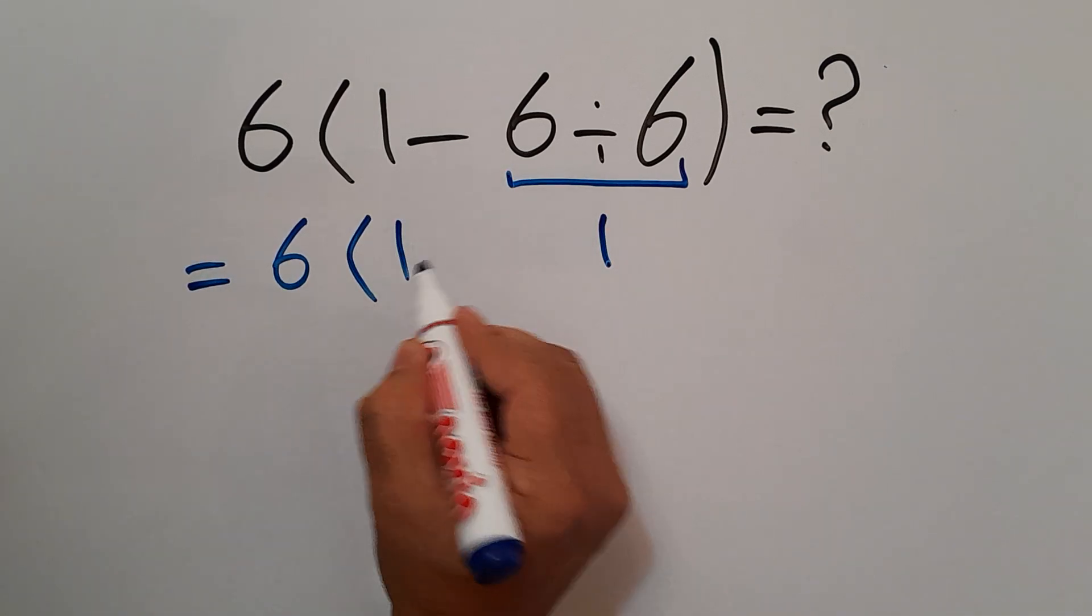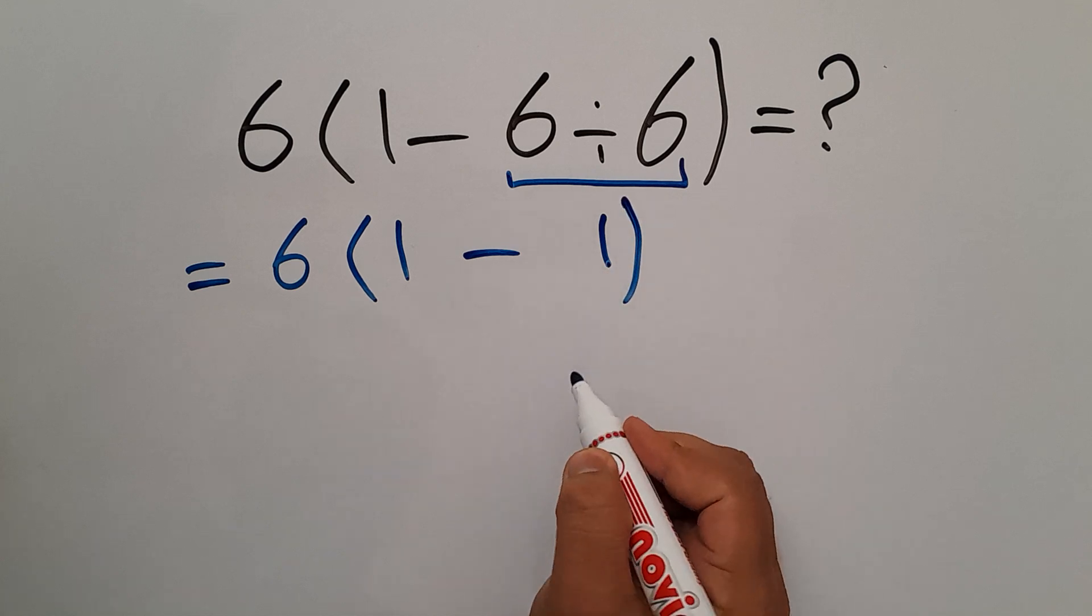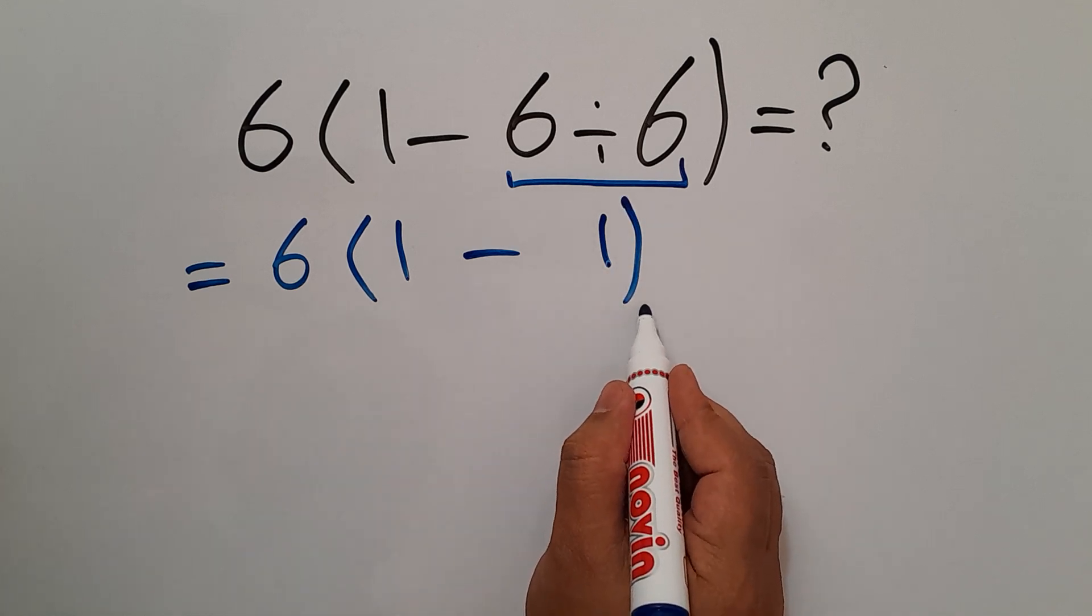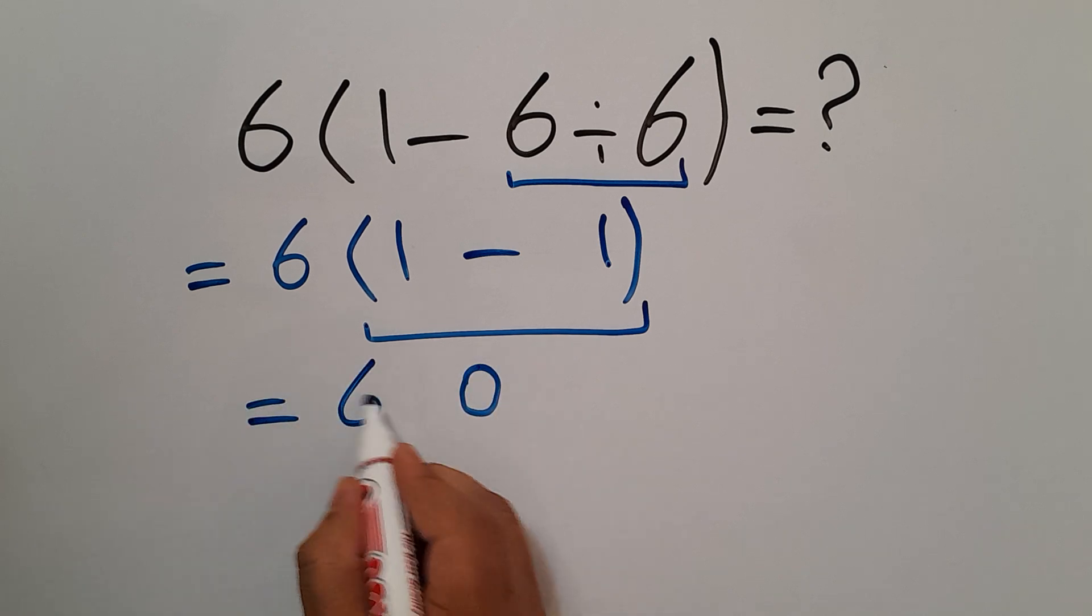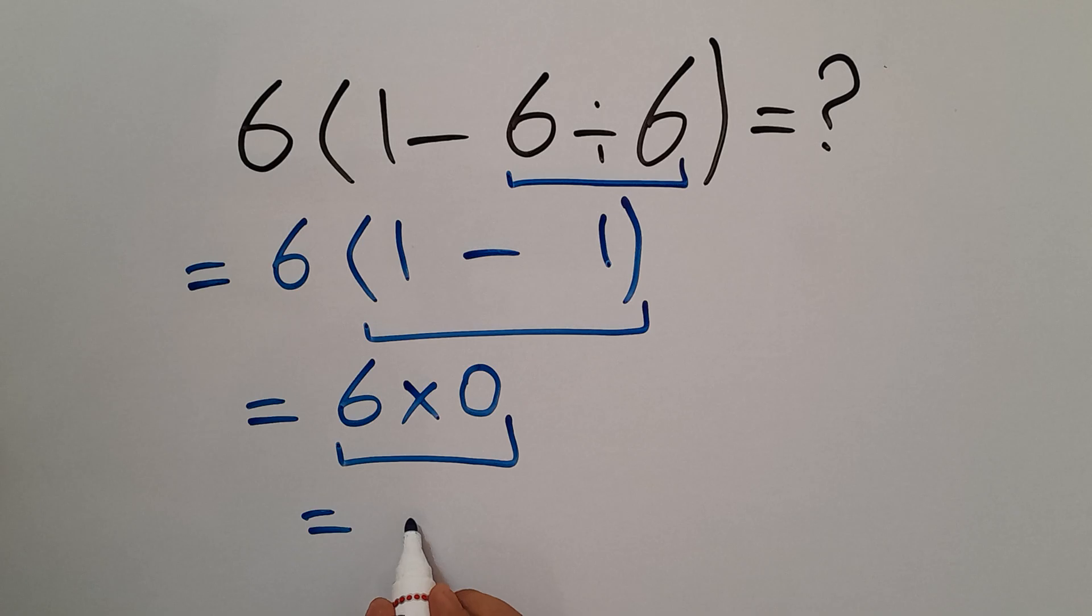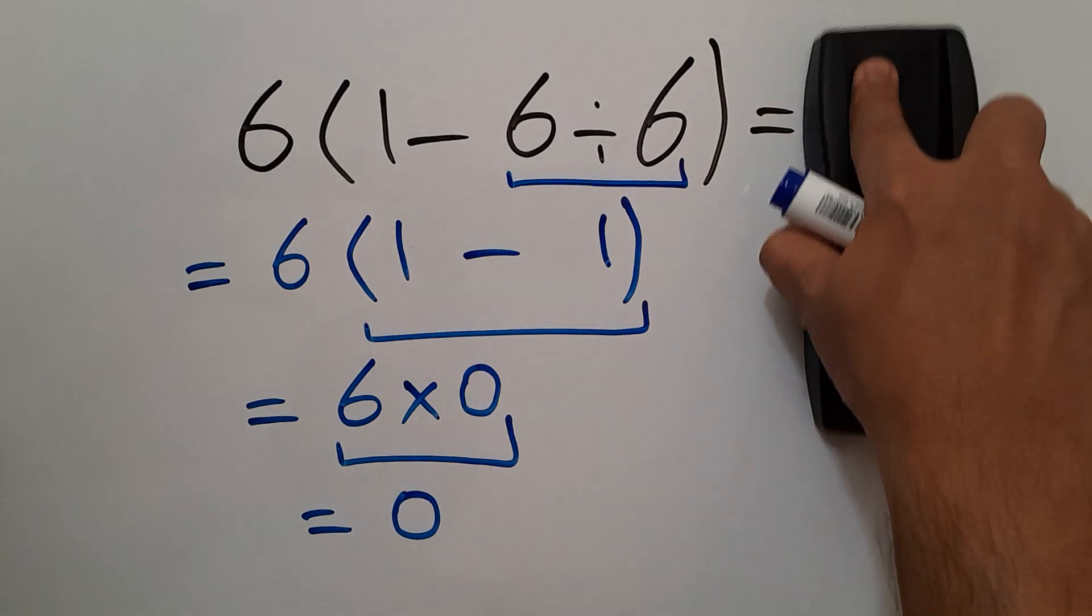And 1 minus 1 equals 0, so we have 6 times 0. And 6 times 0 is just 0, so our final answer to this problem is just 0.